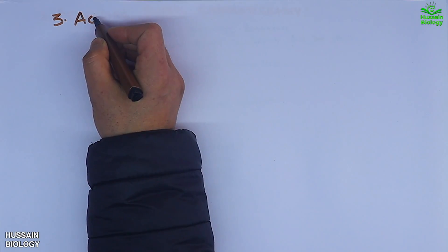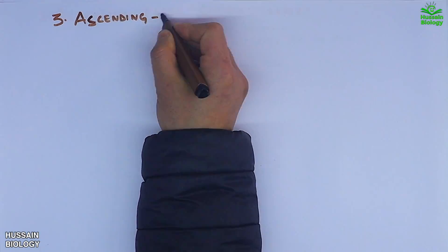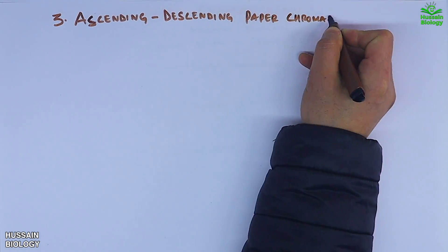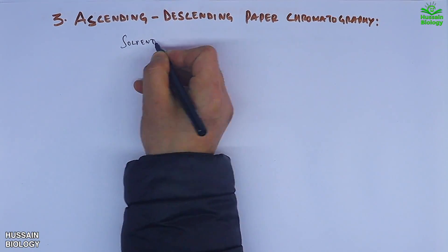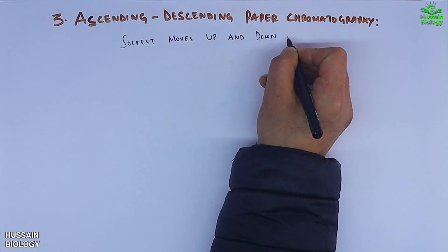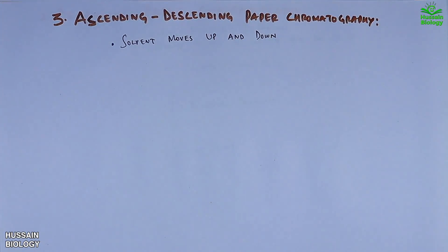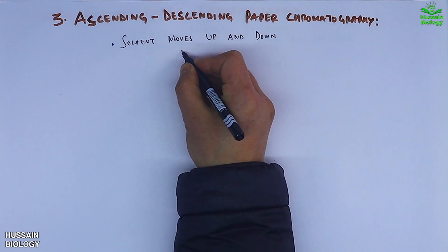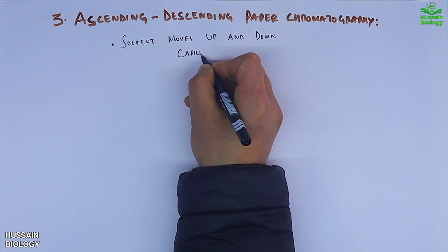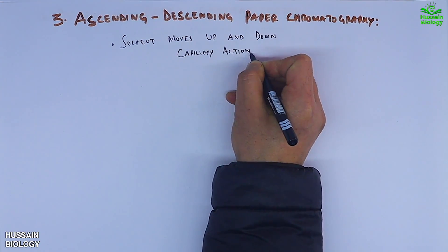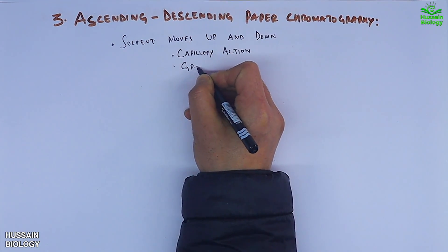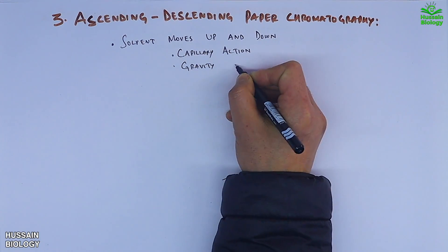The third type is ascending-descending paper chromatography, where the solvent moves upwards first and then moves downwards. Both capillary action as well as gravity are involved in this process.